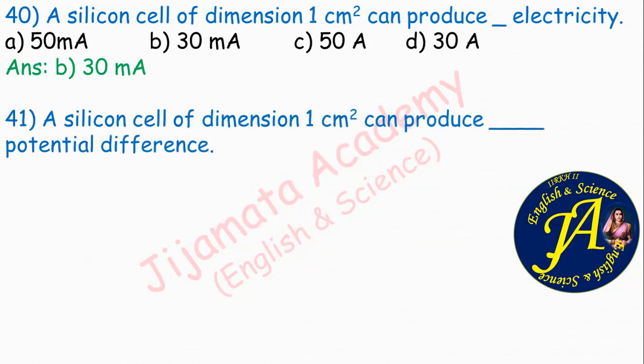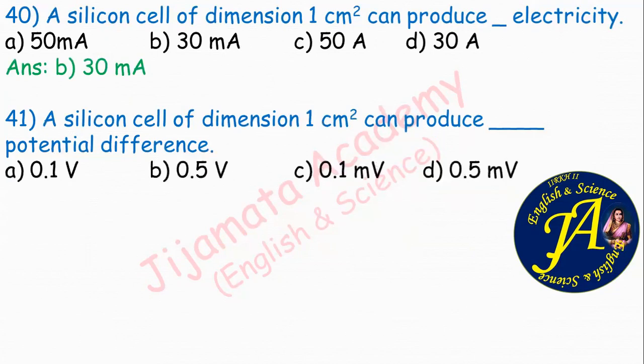A silicon cell of dimension 1 centimeter square can produce dash potential difference. Options are 0.1 volt, 0.5 volt, 0.1 millivolt, 0.5 millivolt. The correct answer is option B: 0.5 volt. A silicon cell of 1 centimeter square dimension produces 0.5 volt potential difference.